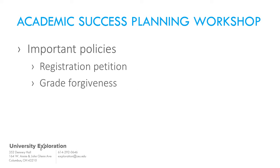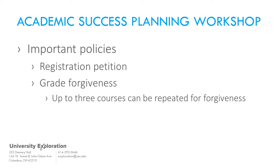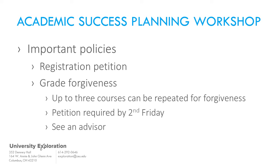You may also be eligible for grade forgiveness, which could have a significant impact on your GPA and help you get off probation more quickly. You may use forgiveness for up to three classes during your time at OSU. You must meet with an academic advisor prior to the second Friday of the semester to fill out an application to retake a course for forgiveness. When you retake a course for forgiveness, the first grade you earned will be dropped from your cumulative GPA and the new grade will count instead. This change will not occur on your record until after the withdrawal deadline for the semester in which you are retaking the course. Note that the original grade will still remain on your transcript. If you are considering using forgiveness, you should discuss those plans with your academic advisor as soon as possible.